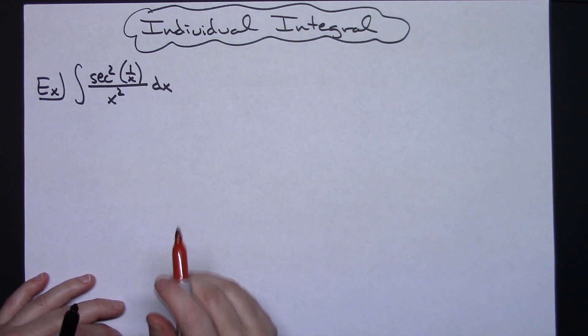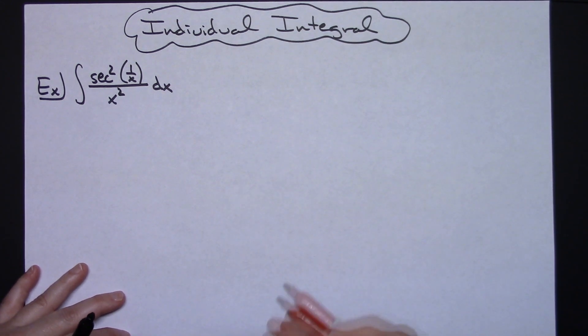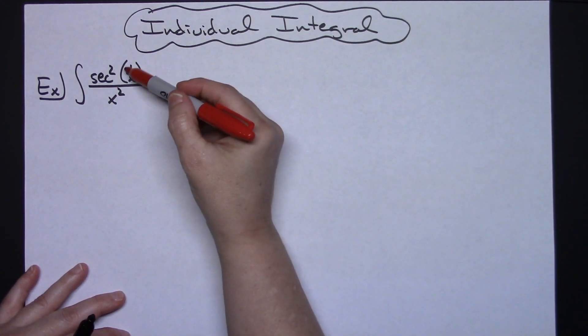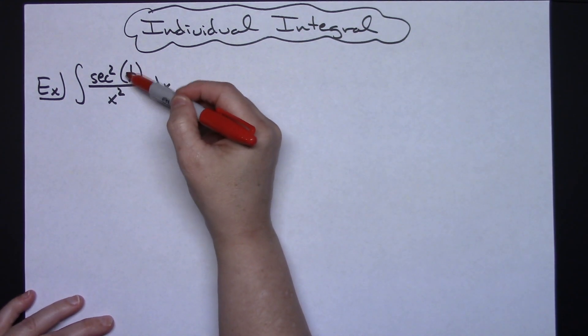It is going to be just a straightforward u substitution. So I'm going to look on the inside most part of the function, which is right here, and I'm going to be letting my u be that 1 over x.